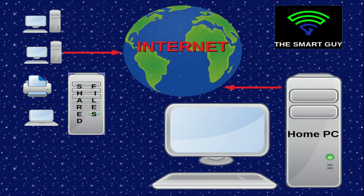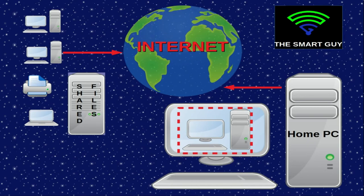Now if you look at how a remote desktop works, that's different — that's like looking at your work computer from another one. So you leave your desktop computer at work, it stays on, and then at your home computer you will actually be able to see it from where you are at home. You can see everything that your computer at work is doing, you can control the keyboard and the mouse, you can open files and all the same programs that you do at work.